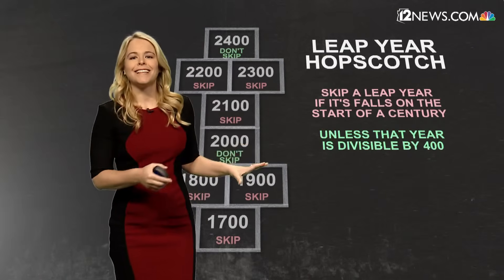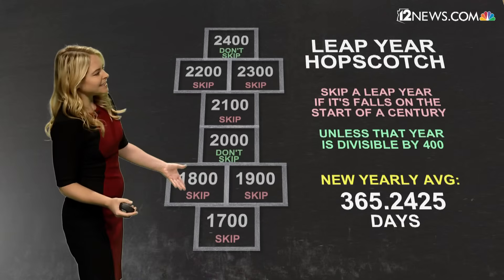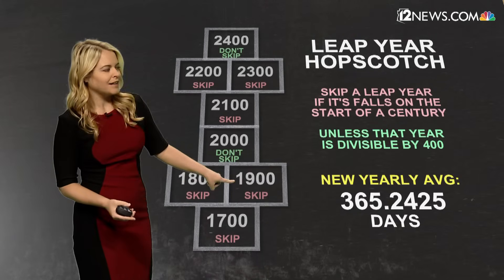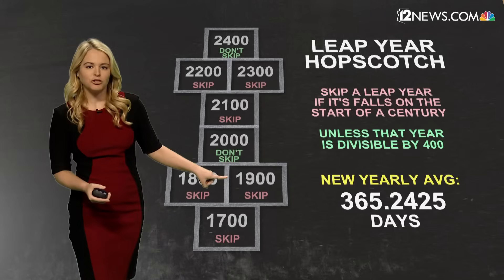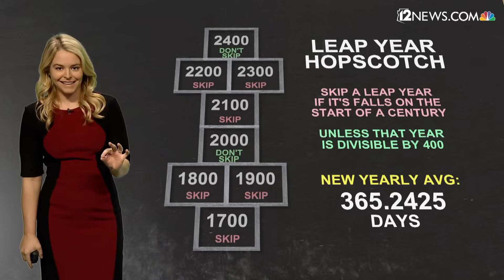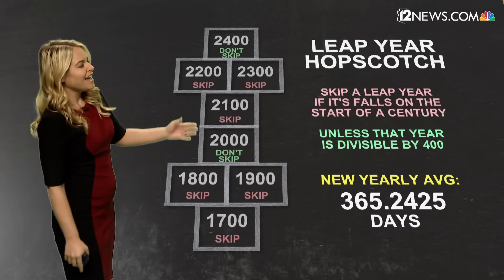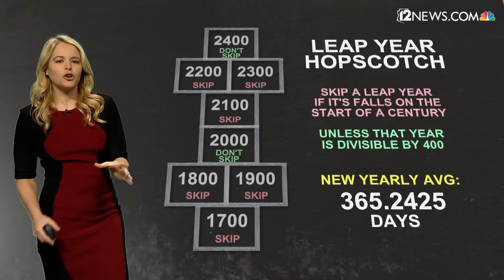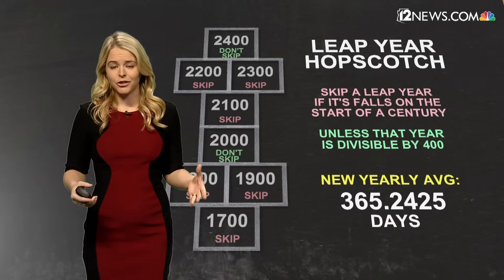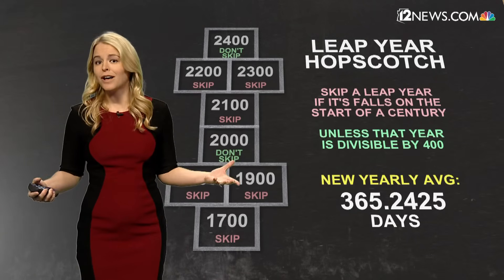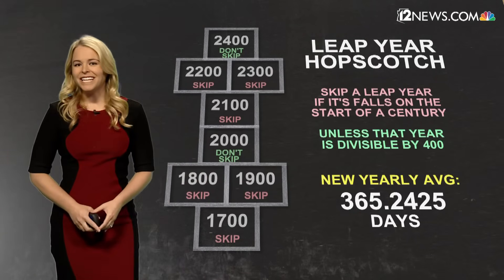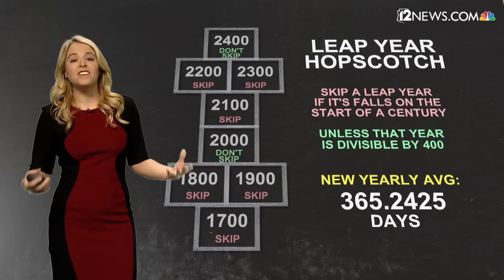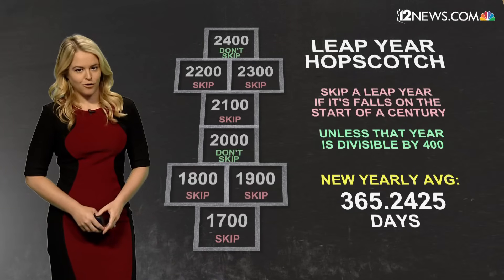So we go back and look at the century years. You see here: years 1700, 1800, 1900 — those were not leap years. The year 2000, that was. So in order for a century year to be considered a leap year, it needs to be divisible by 400.